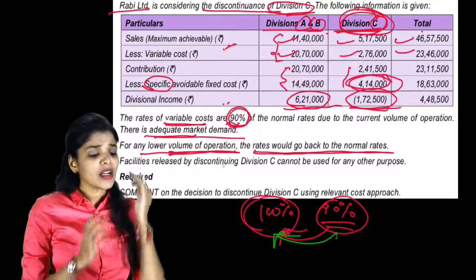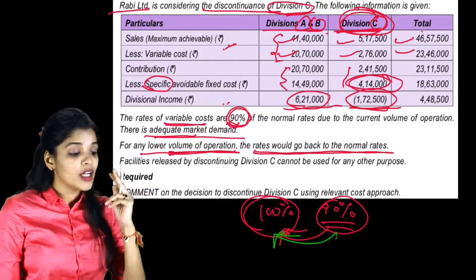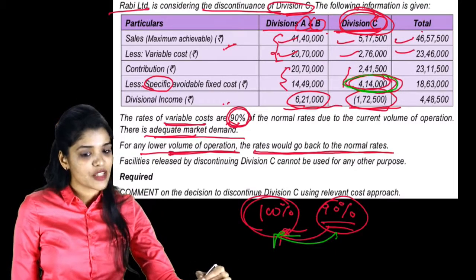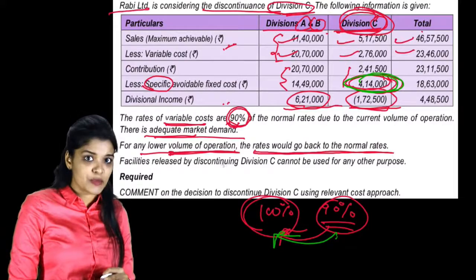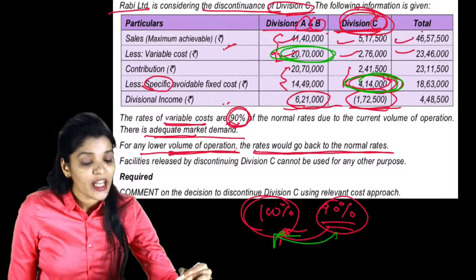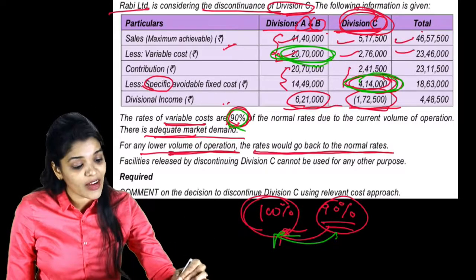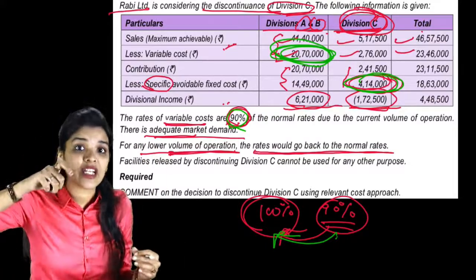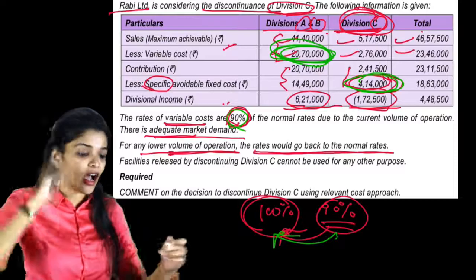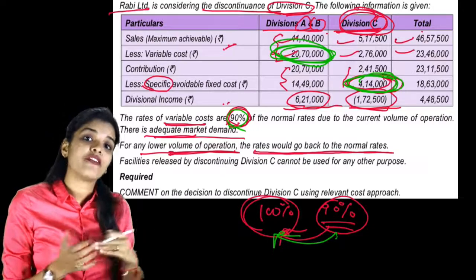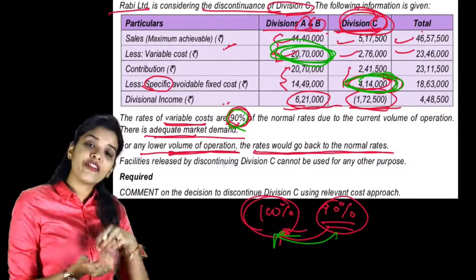So basically, if we discontinue Division C, what will happen? Two things will happen. One, this specific fixed cost will be saved, there will be savings of specific fixed cost. But increased expense - this 90% variable cost, will now become 100%. That 10% increase will be an expense, and this fixed cost will be saved. When we take the difference between these two, we'll see whether there's a loss or profit, whether there's a saving or loss.